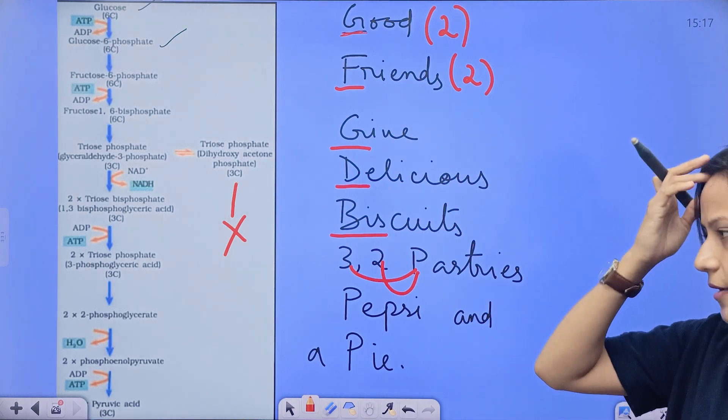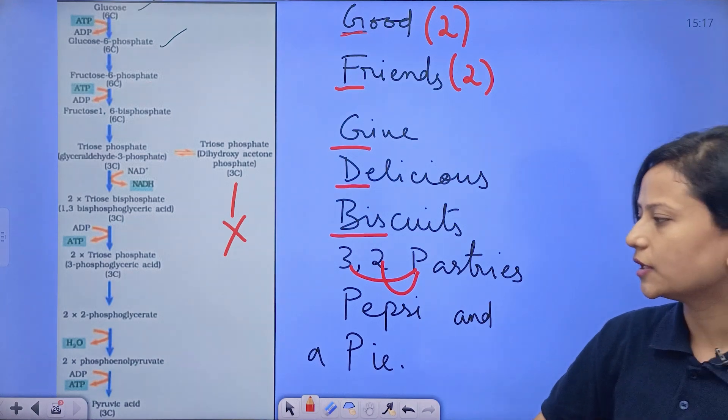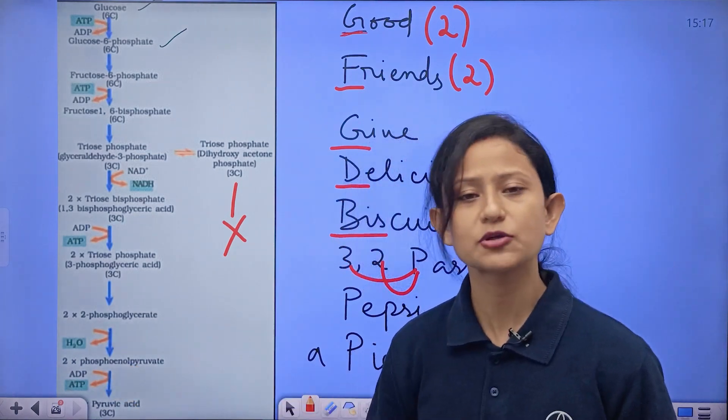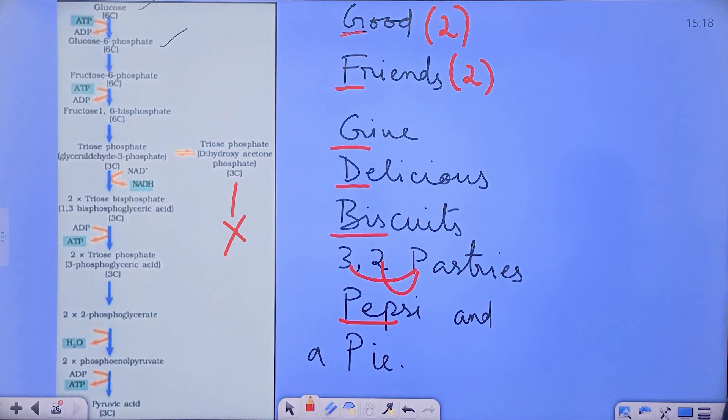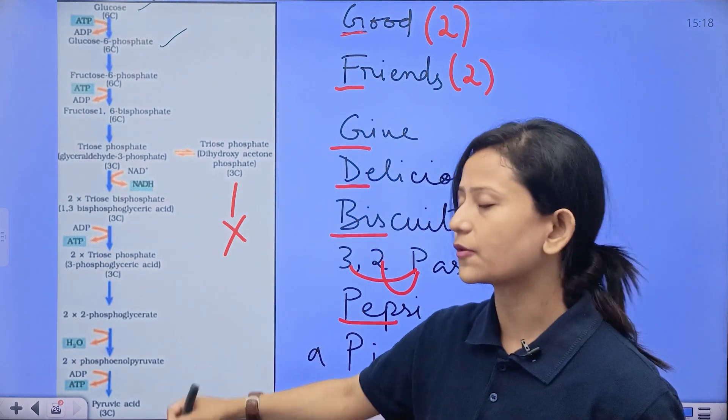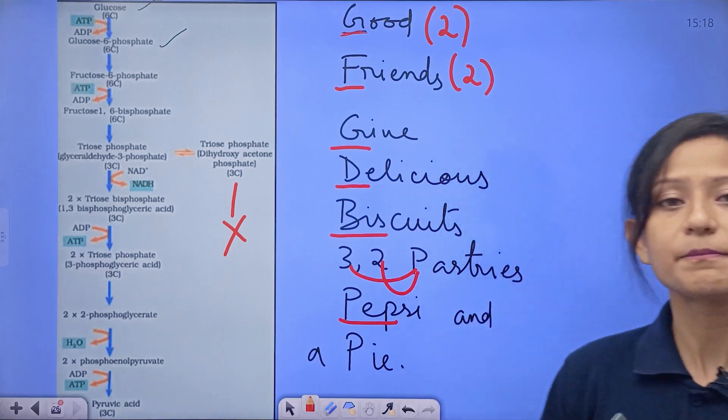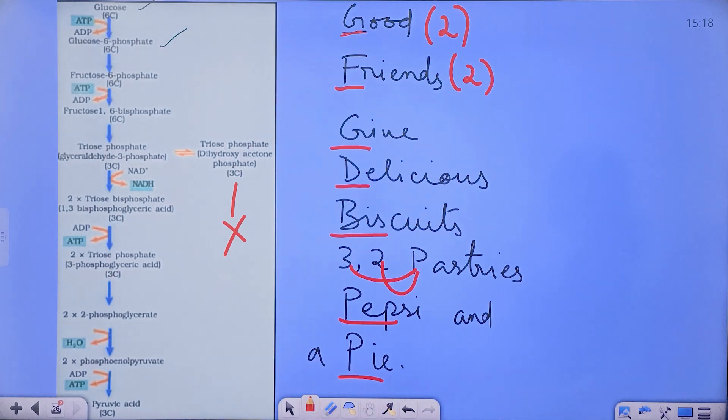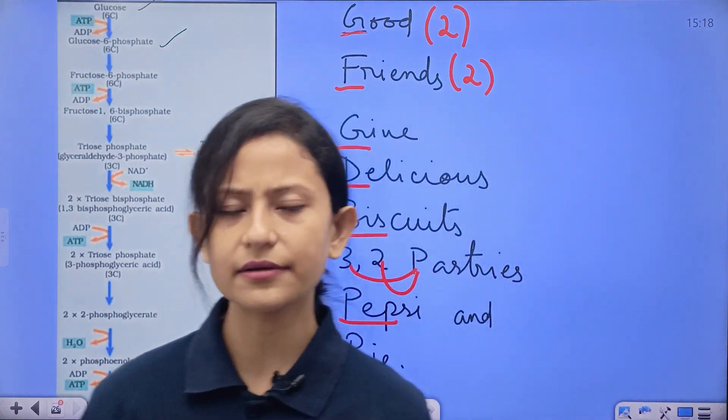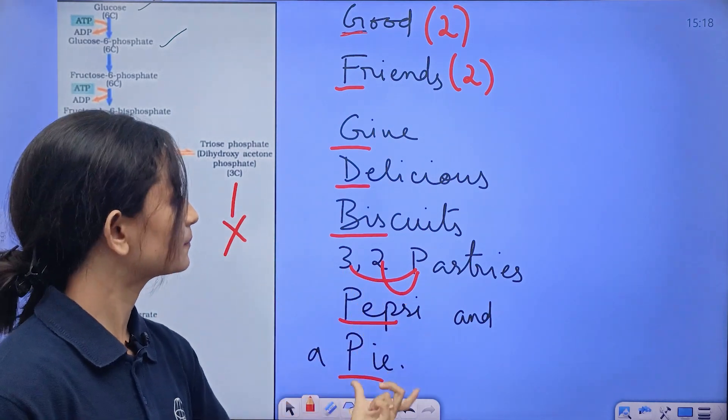Then 2-phosphoglyceric acid converts into phosphoenol pyruvate, which we shorten to PEP. PEP, that is Pepsi. Pepsi stands for phosphoenol pyruvate, that is PEP. And PEP breaks down into the last compound of the glycolysis cycle, that is pyruvate: Pi, pyruvate. Now can we just easily remember the cycle?